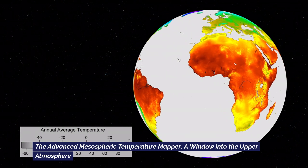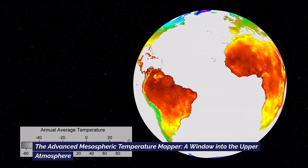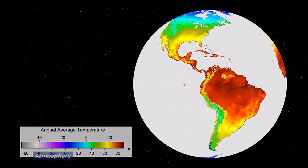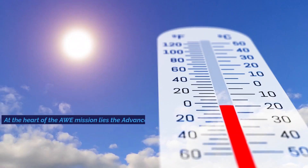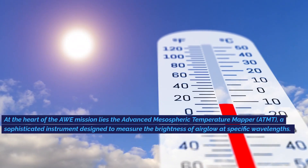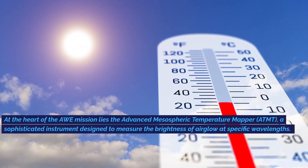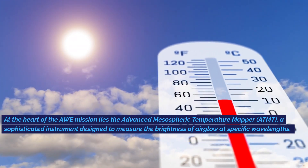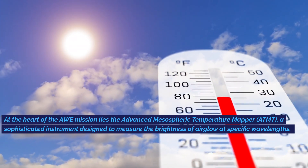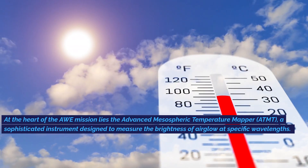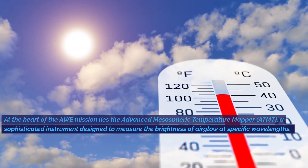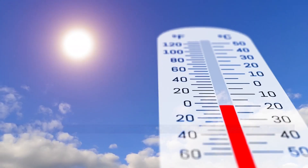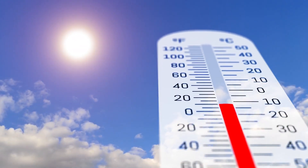The Advanced Mesospheric Temperature Mapper — a window into the upper atmosphere. At the heart of the AW mission lies the Advanced Mesospheric Temperature Mapper, ATMT, a sophisticated instrument designed to measure the brightness of airglow at specific wavelengths.